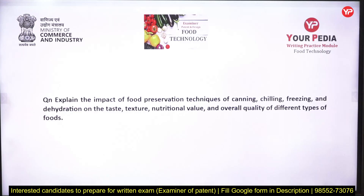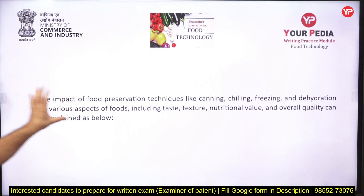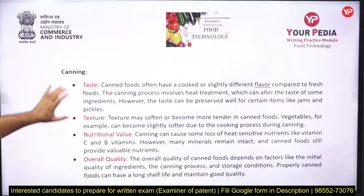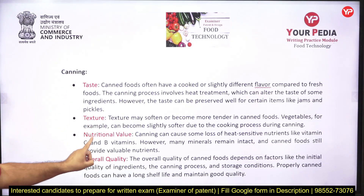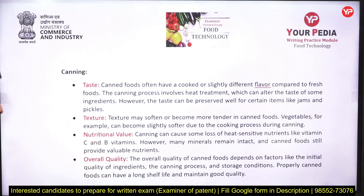Third question related to food preservation: 'Explain the impact of food preservation techniques on the taste, texture, nutritional values, and overall quality of different types of foods.' This is a very good question. You need to understand what kind of questions can be framed and prepare accordingly. Introduction: the impact of food preservation techniques like canning, chilling, and freezing on various aspects of food including overall quality can be explained as follows.